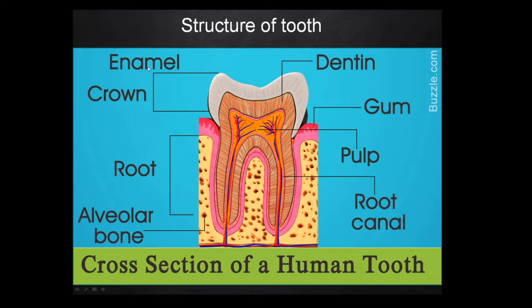Below the enamel, the hard dentine is present. Inside the dentine, the soft pulp is present. It is the central part of the tooth and has blood vessels and nerves.